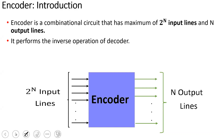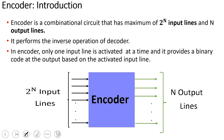In the encoder, you activate one input line at a time — that line is set to 1 and all other inputs are 0. When you activate any line, the output represents that line. Only one input line is activated at a time, and the encoder provides a binary output based on the activated input line.